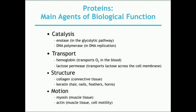Another function is motion. In skeletal, cardiac, and smooth muscle, proteins such as myosin and actin are key. Myosin is the major contractile protein — it uses adenosine triphosphate to physically move and cause muscle contraction. Actin works in conjunction with myosin and also plays a major role in cell motility, such as the movement of cilia and the cytoskeleton.